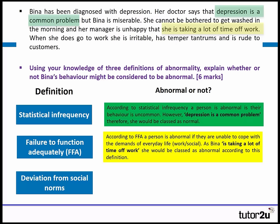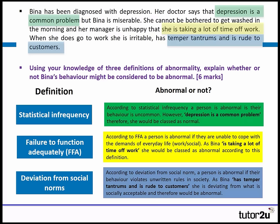Last, deviation from social norms — she has temper tantrums and is rude to customers. According to this definition, a person is abnormal if their behaviour violates unwritten rules in society. Having temper tantrums and being rude to people does go against what is socially acceptable, and therefore we would call her abnormal according to this definition.